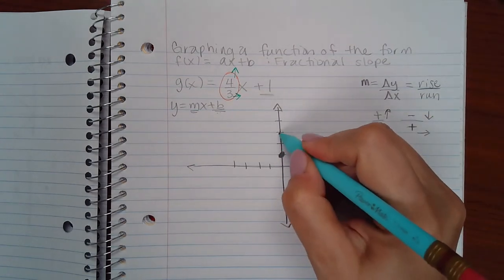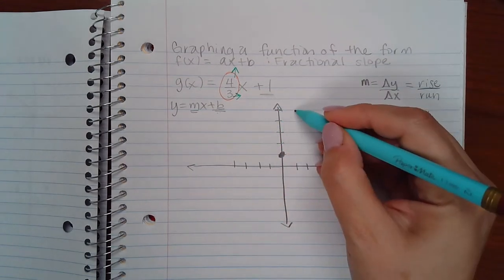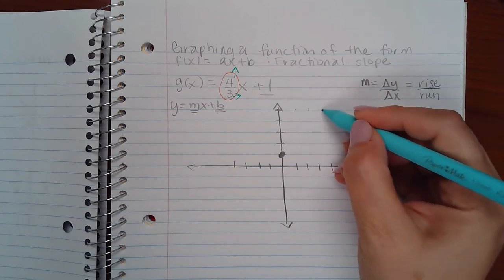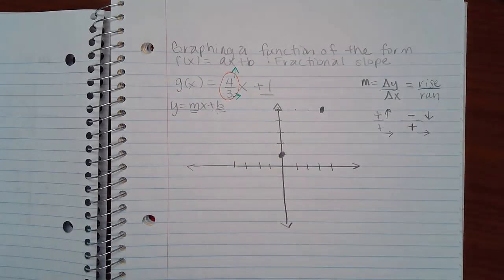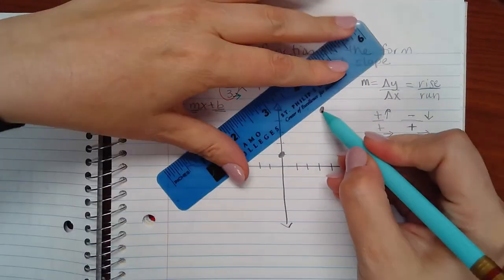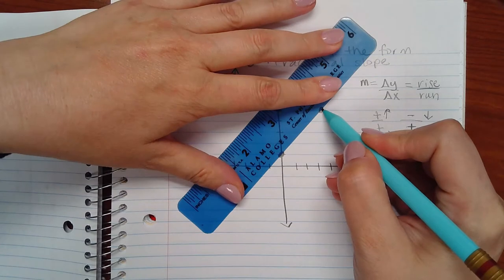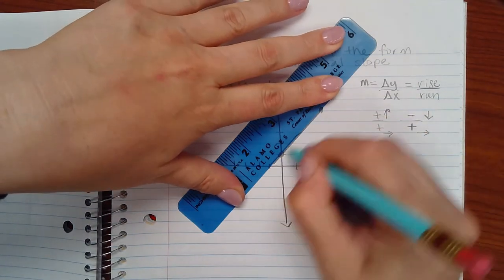So I'm going to go up 1, 2, 3, 4 units, and then I'm going to go to the right, 1, 2, 3 units. And this is where my second point will be. And then I can draw a line through the two points to get the graph of the line.